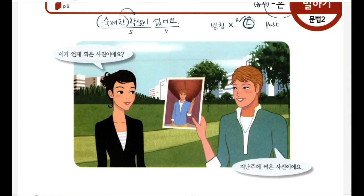다이알로그 한번 봅시다. 이거 언제 찍은 사진이에요? 언제 찍은 modifies 사진. Literally: 'Is this a picture you took when?' → In English: 'When did you take this photo?' 앤디가 말해요: 지난주에 찍은 사진이에요. It is a photo that I took last week. Past tense, so 은 is used here.